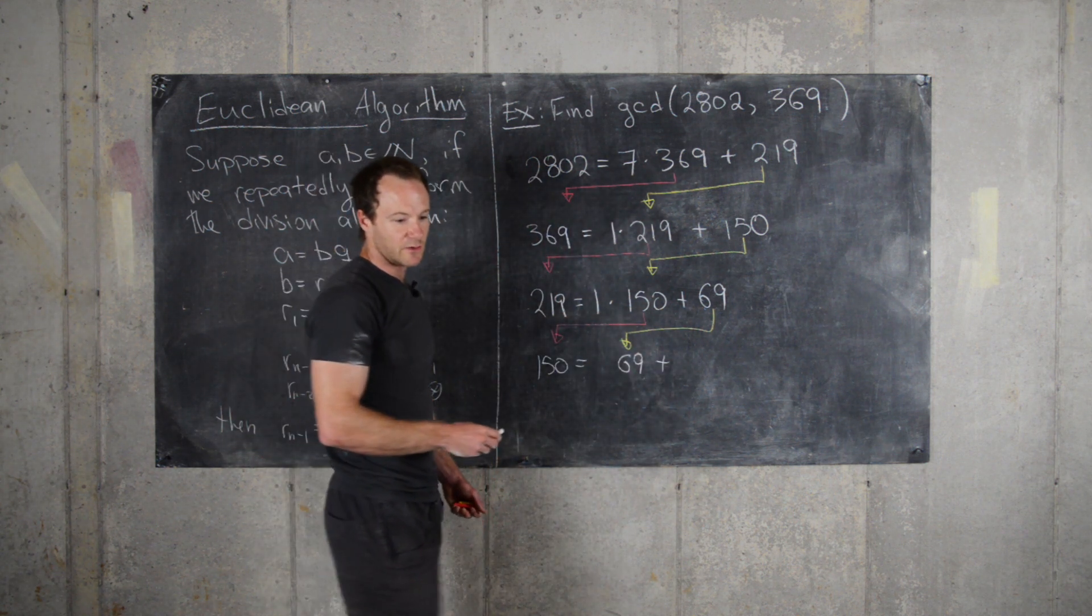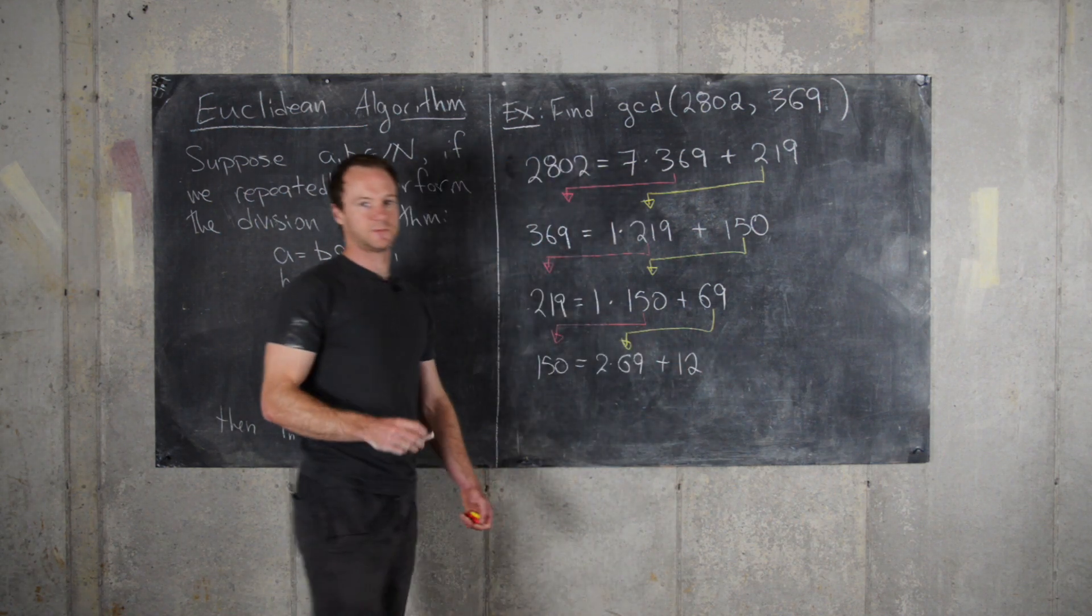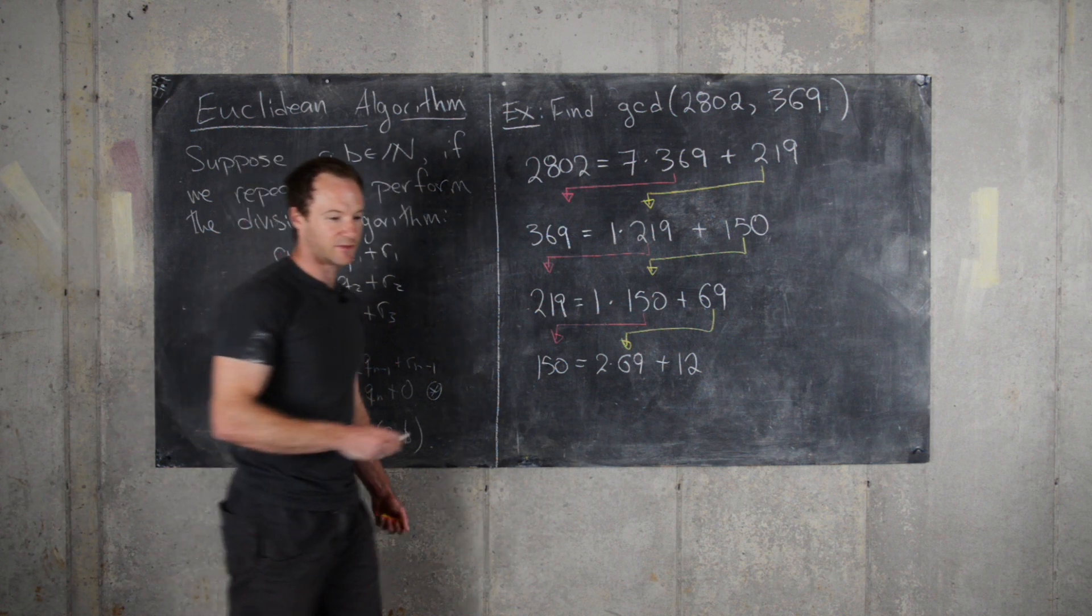So in that case, we get this is 2 times 69 plus 12. And now let's keep going.